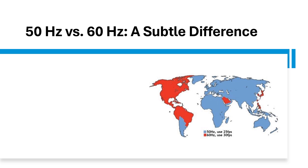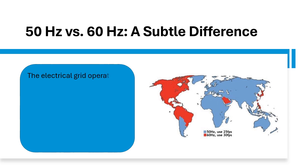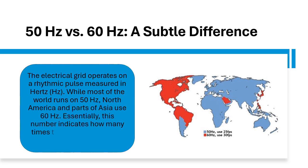50 Hz vs. 60 Hz — a subtle difference. The electrical grid operates on a rhythmic pulse measured in Hz. While most of the world runs on 50 Hz, North America and parts of Asia use 60 Hz. Essentially, this number indicates how many times the current alternates direction in a second.